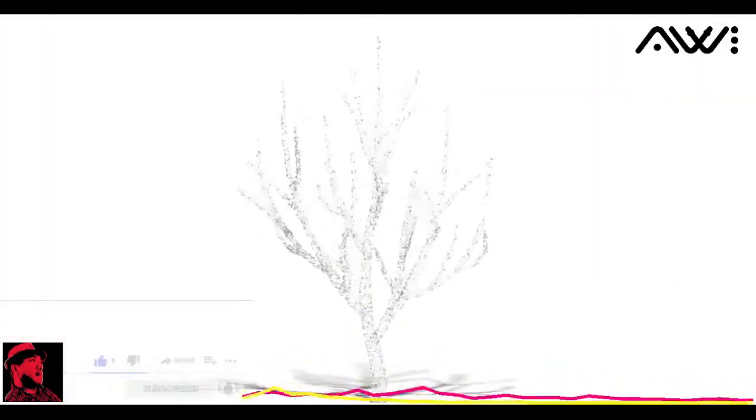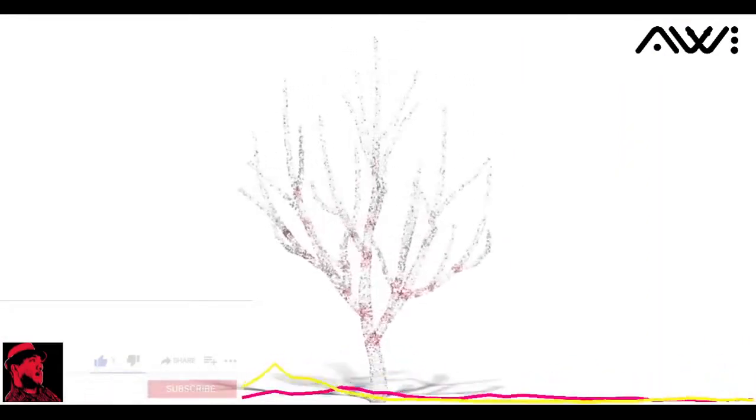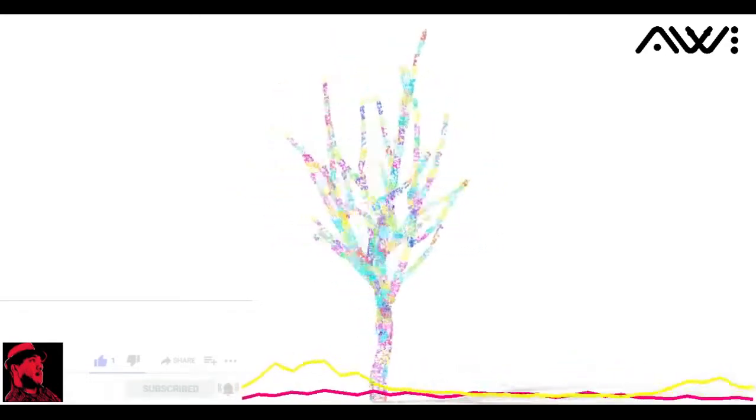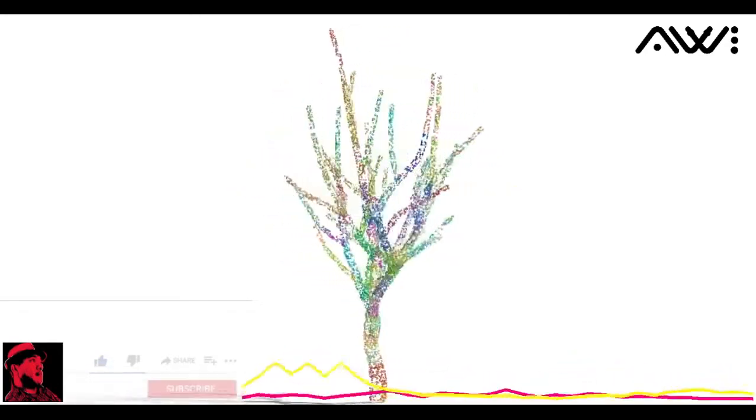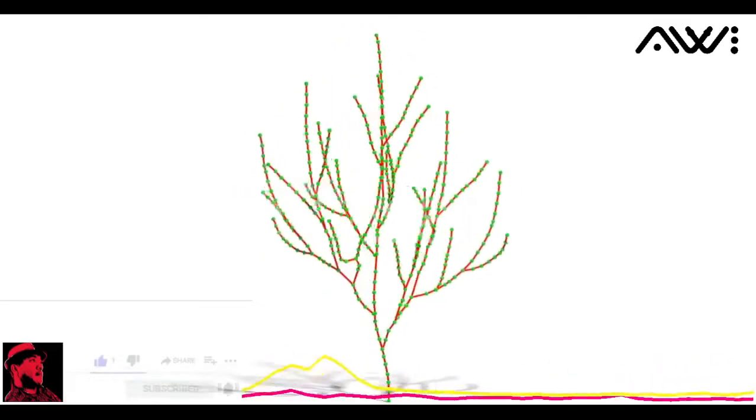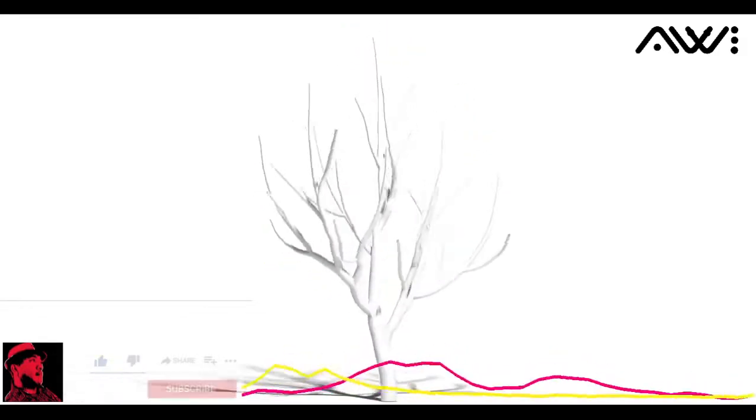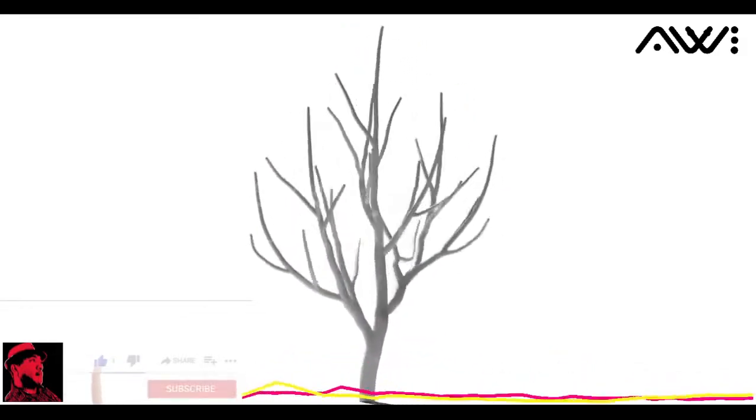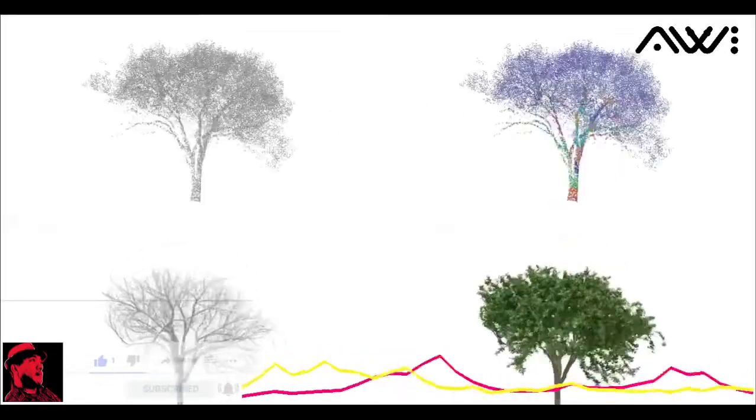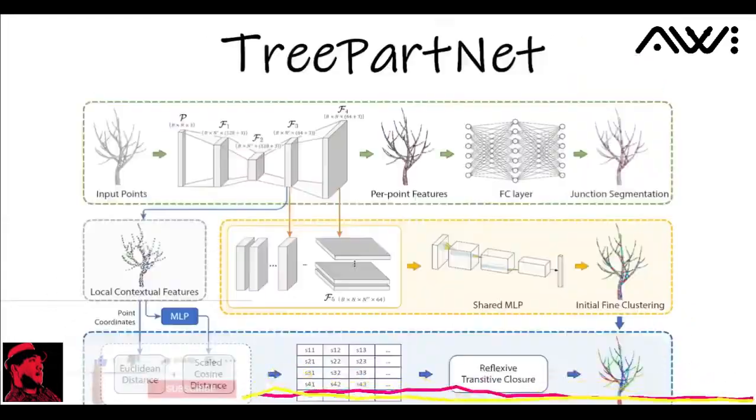Starting from the input point cloud, we first use a semantic segmentation module to detect the junction parts. Simultaneously, our network decomposes the input into initial clusters which are automatically merged into non-overlapping branches. We then extract discrete skeletal parts to obtain a complete skeleton. Finally, we convert the skeleton into a surface mesh. Guided by the extracted foliage points, the leaves are generated at the end of the growth cycle and textured according to the tree species. Watch our talk for more info.